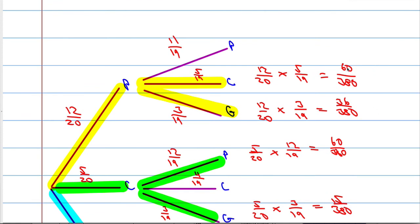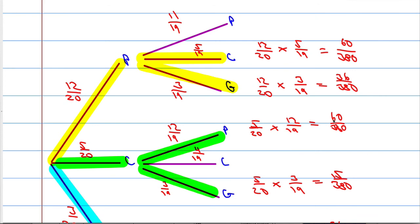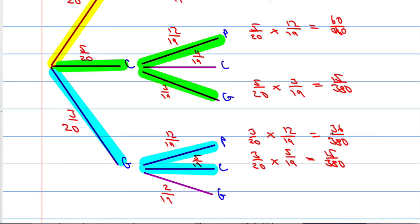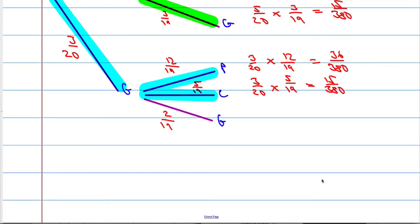Let's add up all the numerators: 60 + 36 = 96, then 156, 171, 207, 222. Adding them all up — you could use your calculator — we get 222 out of 380.